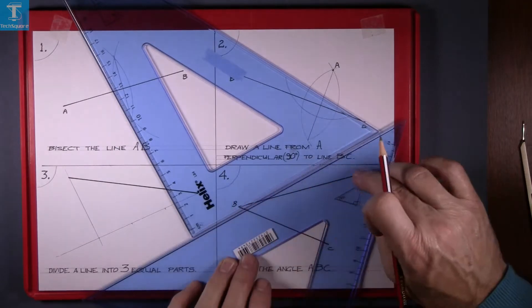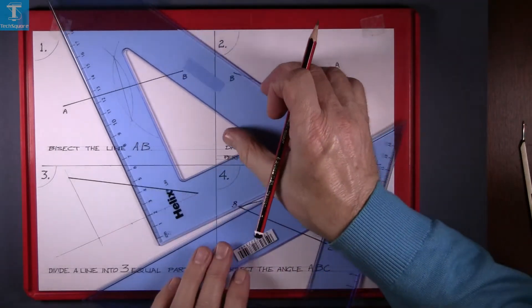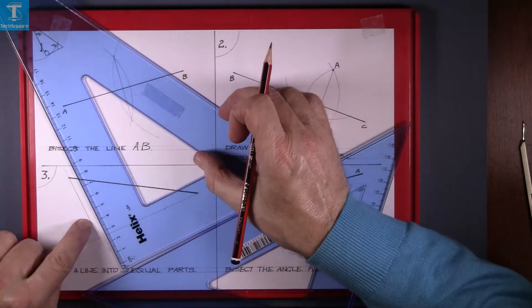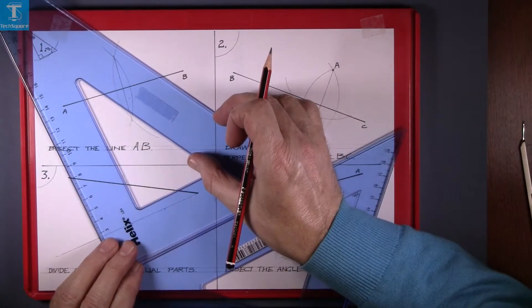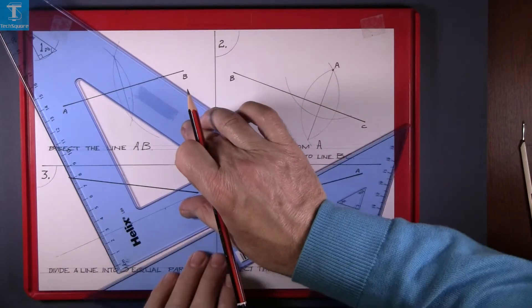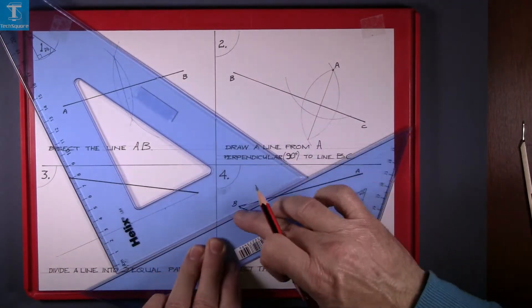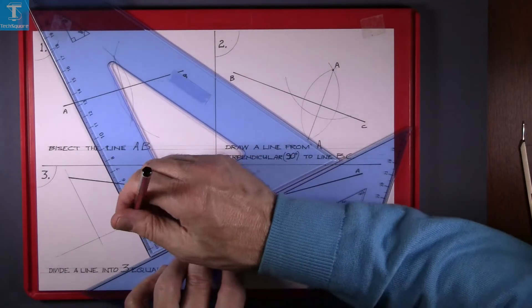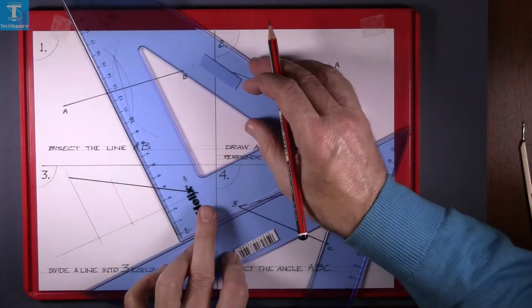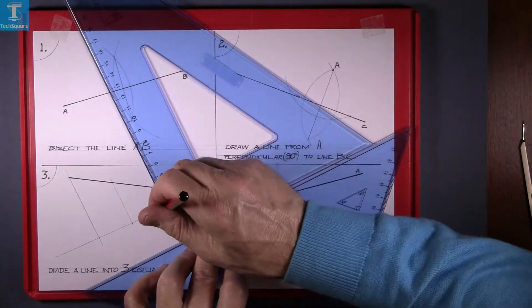So to do that, we must use the other set square here. So get this set square in line with the line at the end there. Hold that set square in place and bring the other set square up tight against the bottom. But now you can slide the top set square along like that and draw the line parallel to the first one.